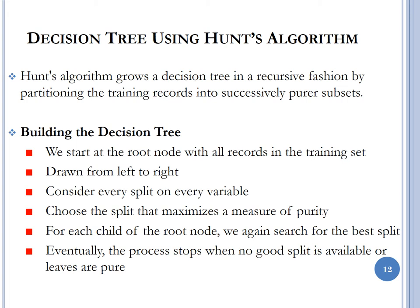The steps in the Hunt's algorithm: start at the root node with all records in the training set and draw the tree from left to right. Consider every split on every variable and choose the split that maximizes purity. For each child of the root node, search for the best splits again. Repeat this process until there are no good splits available or the leaves are considered pure.